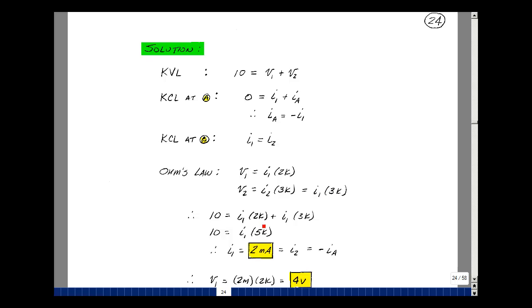So now if I go back and substitute this back into my first equation for V1 and V2, I have I1 times 2k, I1 times 3k. So now I have one equation and one unknown. So I1 times 5k, and that gives me 2 milliamps for I1. But that's also equal to I2 and minus I sub a.